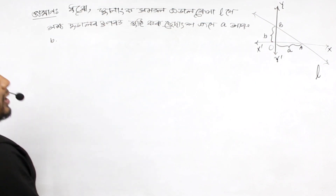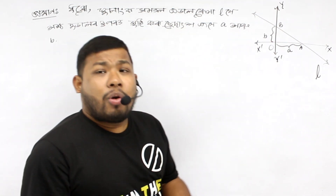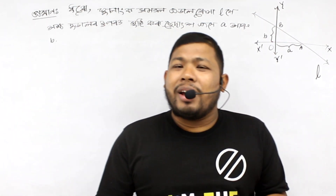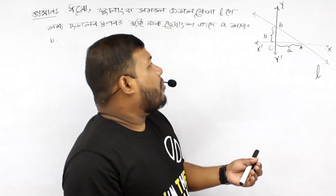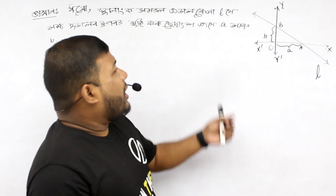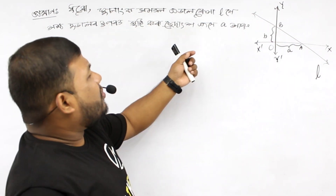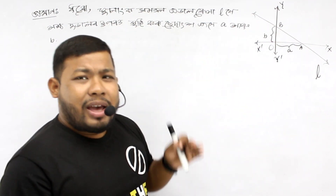Let, with respect to the coordinate plane, a line L form intercepts A and B on the axis.